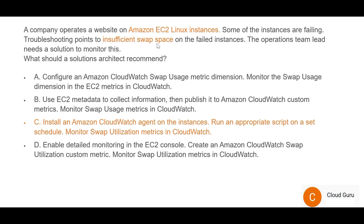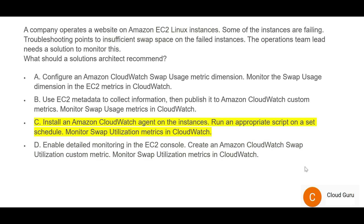To clarify what swap space is: physical RAM stores data, but if physical RAM is full, temporary storage is done in swap space. You can monitor whether swap space is getting full using the CloudWatch agent — that's Option C. Option D incorrectly labels this as a custom metric, but swap space is a system metric, not a custom metric, so D is wrong. C is the correct answer.